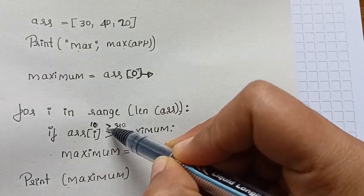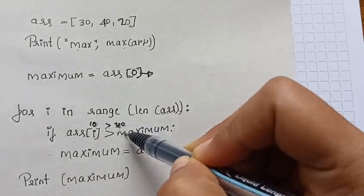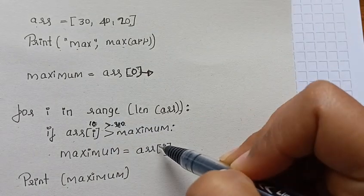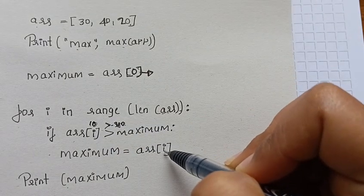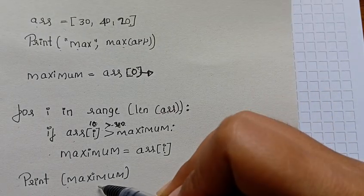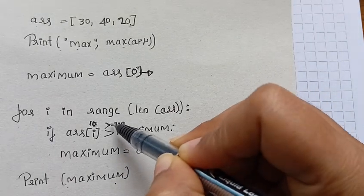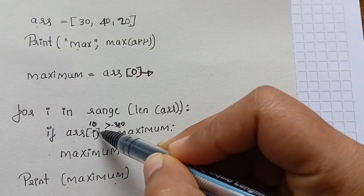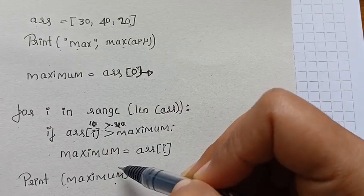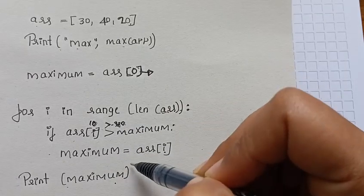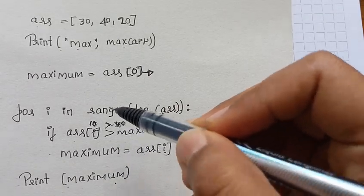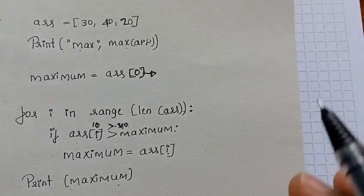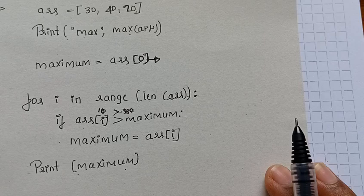Array[i] equals 10 greater than 40 - this is the maximum value and this is the array value. If this is true then you can print the array value as the maximum value. Suppose this is false, then you can change the condition and check the iteration until it will be true. This will find out the maximum element in the array.